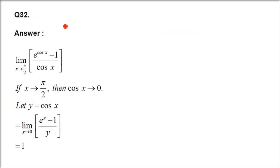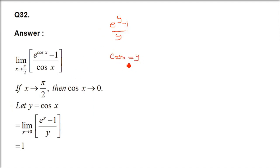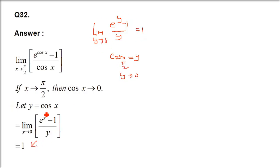Question 32: limit x→π/2 of (e^(cos x) - 1)/cos x. This is already in the form (eʸ-1)/y with y = cos x. As x→π/2, cos(π/2) = 0 so y→0. Then (eʸ-1)/y → 1. The answer is 1.